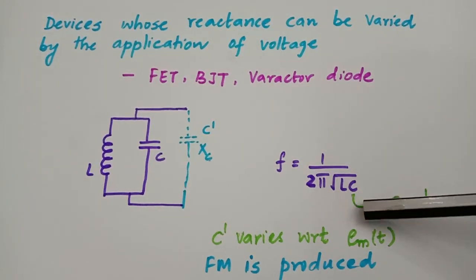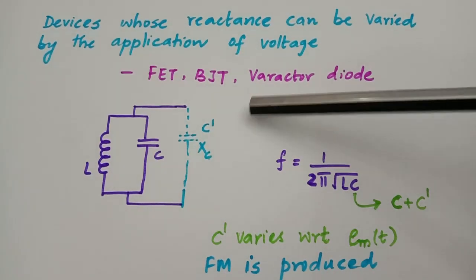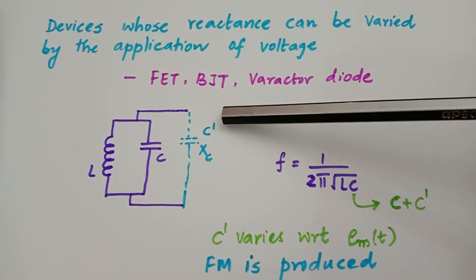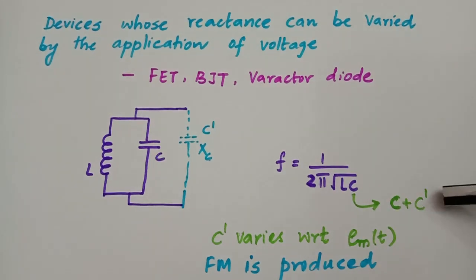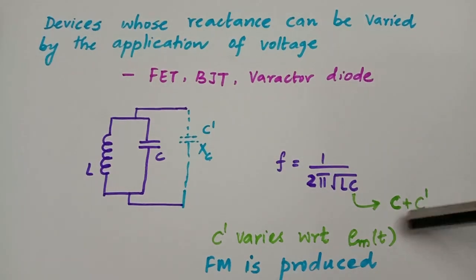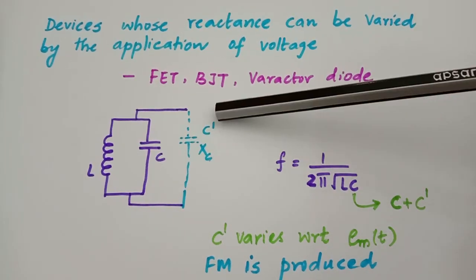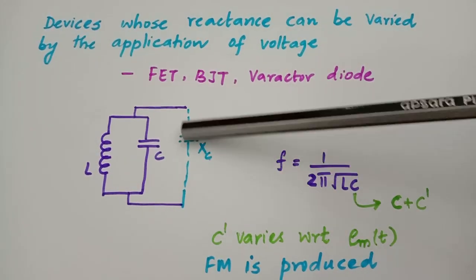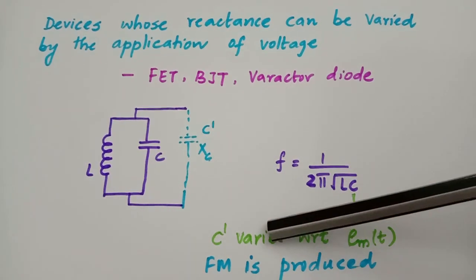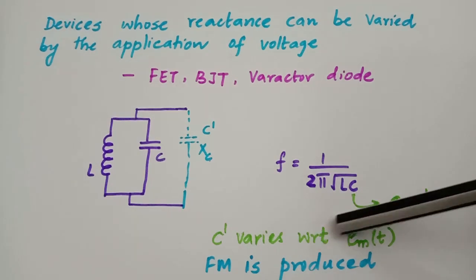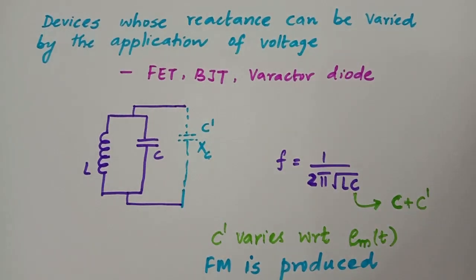The frequency of oscillation is given by 1/(2π√LC). Now suppose we are able to create a capacitive reactance corresponding to a capacitance C'. In that case the effective capacitance changes to C + C' in the circuit and the frequency of oscillation will be varied. So according to the input voltage applied, the reactance can be varied and therefore the frequency of oscillation can be varied, generating a frequency modulated output using a reactance modulator.